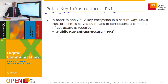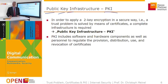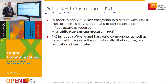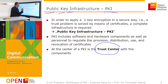We see that a whole infrastructure is necessary — we speak of a public key infrastructure, the PKI. Two-key encryption methods are also called public key encryption. To apply such encryption securely with the trust problem solved, an infrastructure with different components is required. Such PKI includes software components, hardware components, and personnel to regulate the provision, distribution, use, and revocation of certificates.